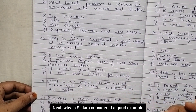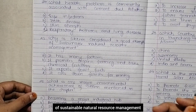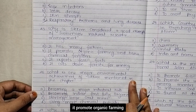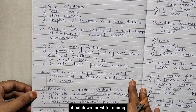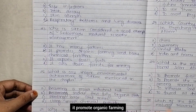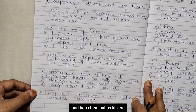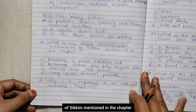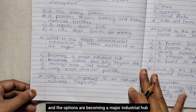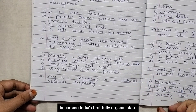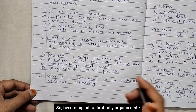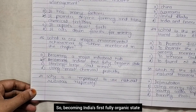Why is Sikkim considered a good example of sustainable natural resource management? Because it promotes organic farming and bans chemical fertilizers. What is one major environmental achievement of Sikkim mentioned in the chapter? Options are becoming a major industrial hub, becoming India's first fully organic state, starting large coal mines, using more chemical pesticides. Sikkim became India's first fully organic state.